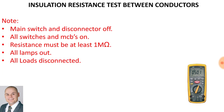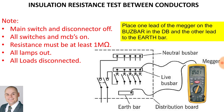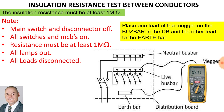When performing an insulation resistance test between conductors: the main switch and disconnector is off, all switches and miniature circuit breakers are on, all lamps are out and all loads disconnected, and your reading should be at least one mega ohm. Place one lead of the megger on the bus bar in the distribution box and the other lead to the earth bar. A good reading should be at least one mega ohm.